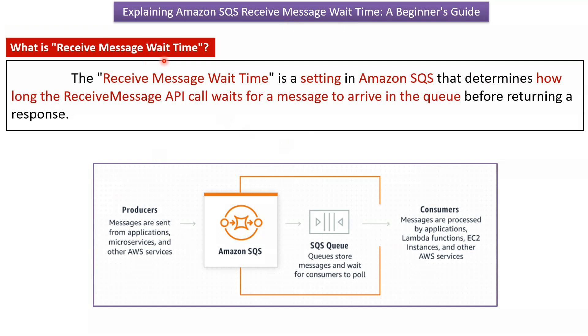What is receive message wait time? The receive message wait time is a setting in Amazon SQS that determines how long the receive message API call waits for a message to arrive in the queue before returning the response.